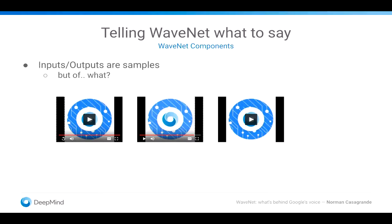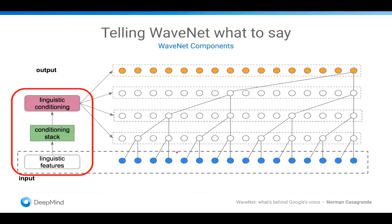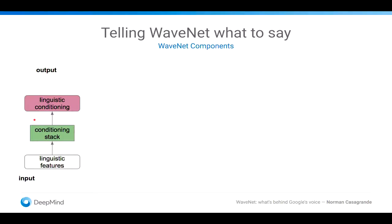So, how do we tell WaveNet what to say? Well, not this. I don't want you to say that. There is this other part, which we call the conditioning stack. In this conditioning stack, you have at the very beginning, what we call these linguistic features, and we stick those as the inputs to the network.